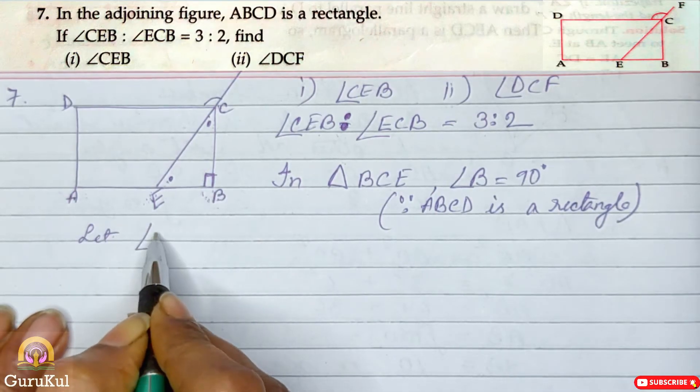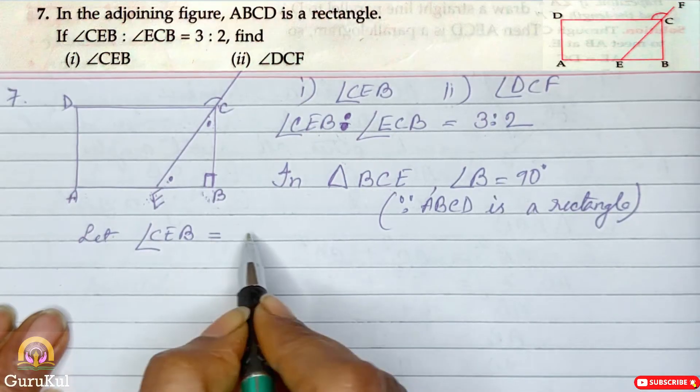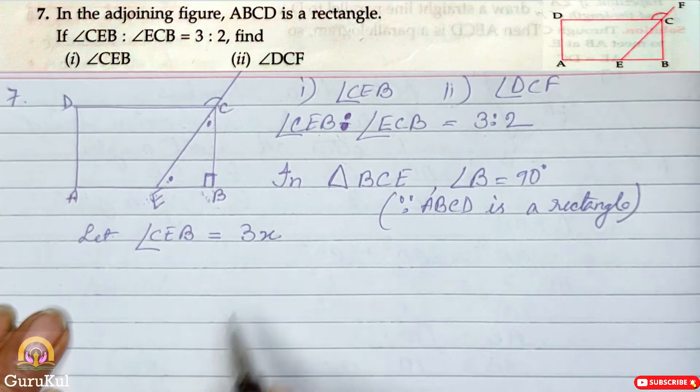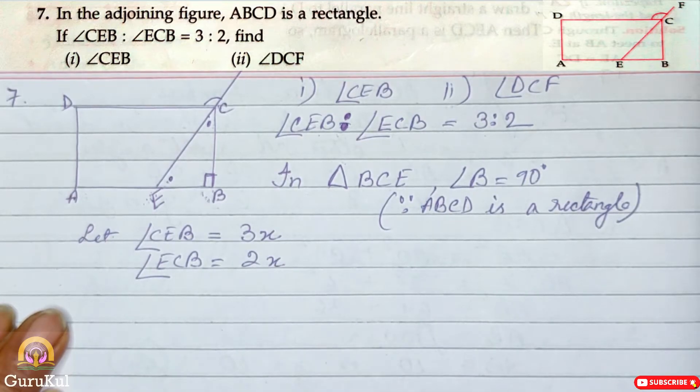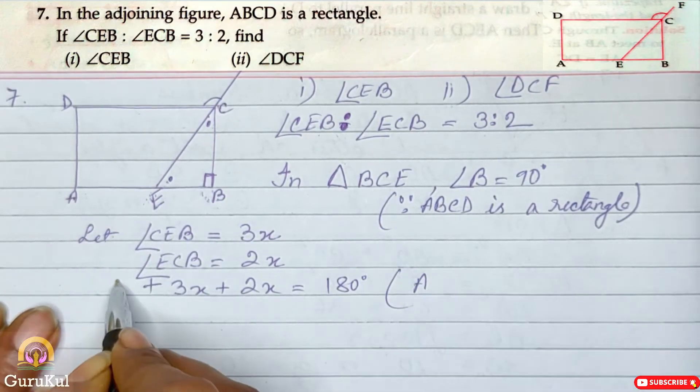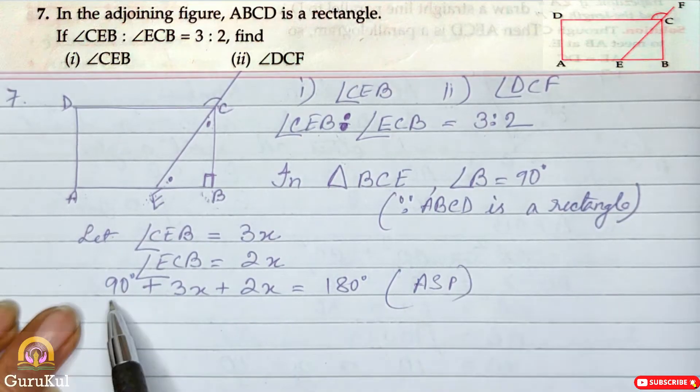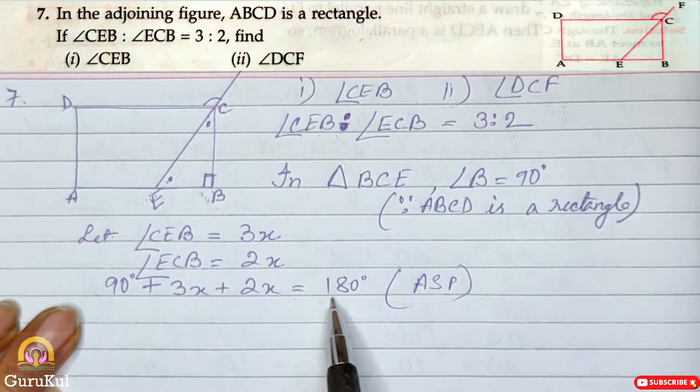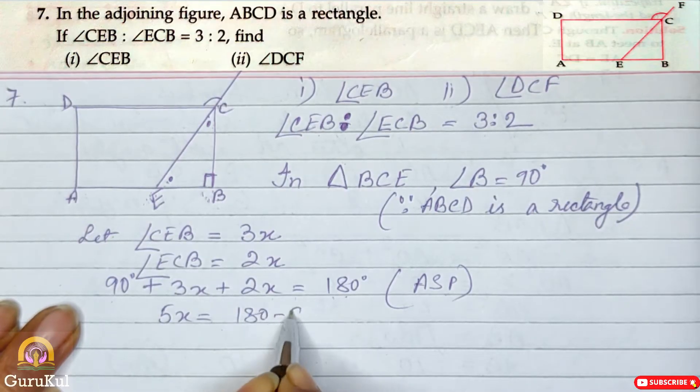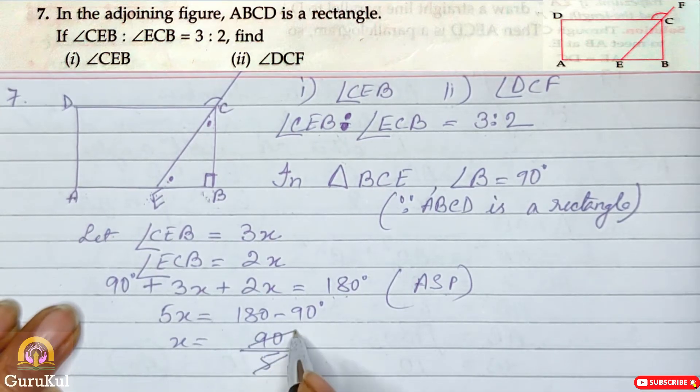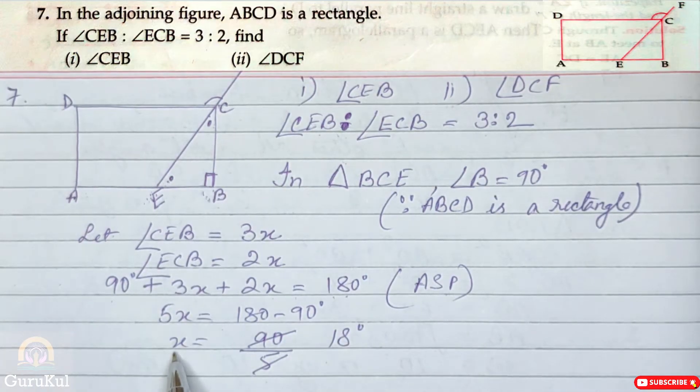So let angle CEB is equal to 3X and angle ECB is equal to 2X. So 90 plus 3X plus 2X is equal to 180 degree, according to angle sum property. Now we will evaluate this. So 5X is equal to 90 degree or X is equal to 90 by 5. After reduction, we got the value 18 degree. So we got the value of X.